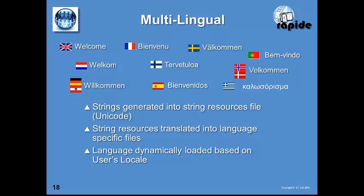For multilingual applications, RAPID was designed from the ground up to support easy translation into many different languages without designing each language as a separate window. You design your window in one language, and all application strings are generated as Unicode strings into a separate string properties file, which can be translated into as many languages as needed. At runtime, RAPID Runtime automatically detects the user's locale and loads the appropriate string resources. Unicode UTF-8 supports all common characters you might need.